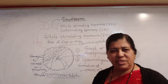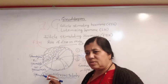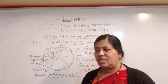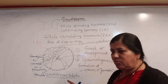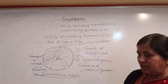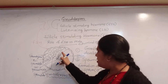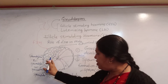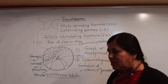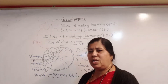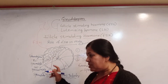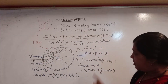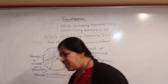To summarize: FSH in males stimulates the growth and development of seminiferous tubules present in the testis. The testis is made up of numerous seminiferous tubules containing Sertoli cells and spermatogenic cells at various stages of sperm production. FSH stimulates the process of spermatogenesis — that is the formation of sperm. This is the role of FSH in males. Now we will discuss the role of FSH in females.